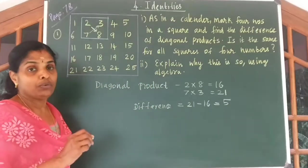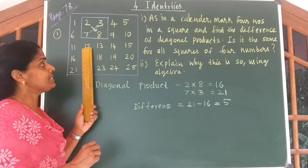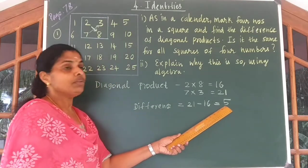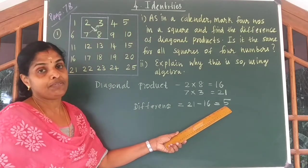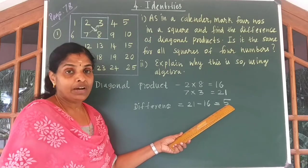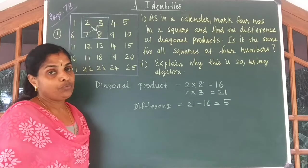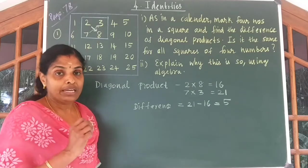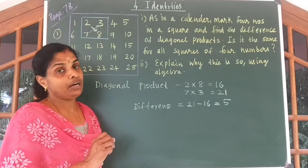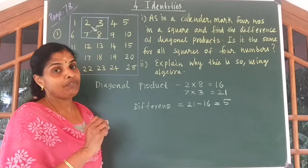Now if you take any 4 numbers here, you will get the same number 5. You can verify it. Now I am going to explain why this is so in algebra. Whenever we prove something using algebra, we use variables instead of numbers.